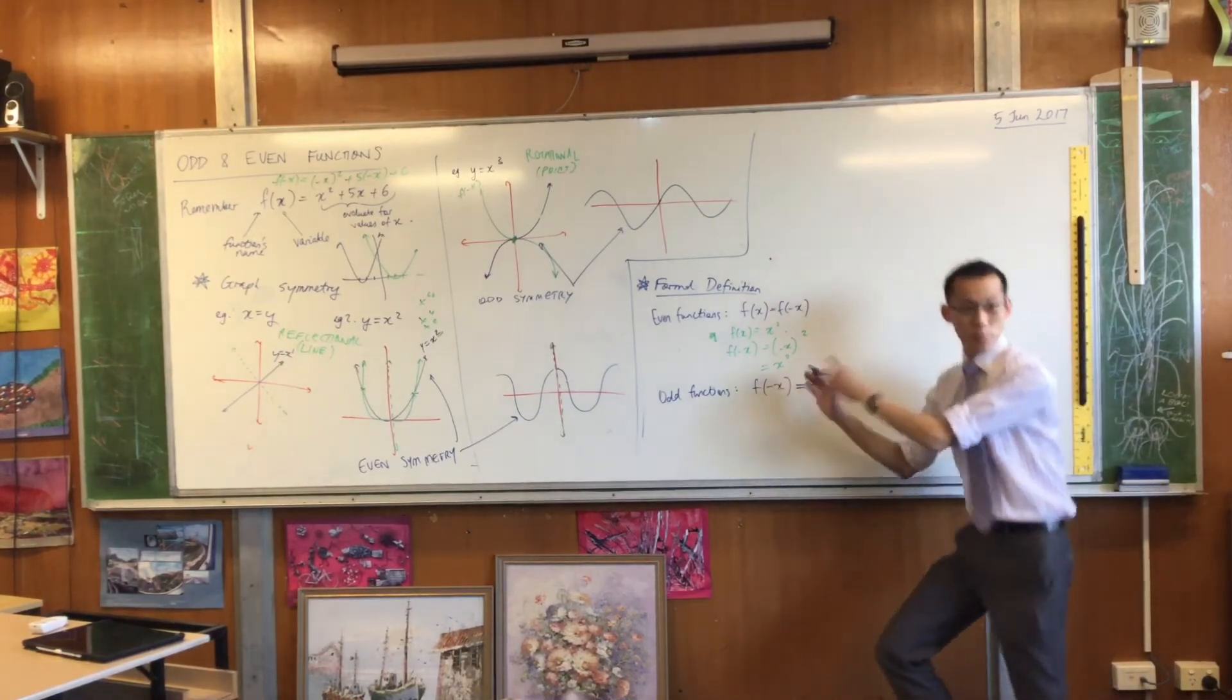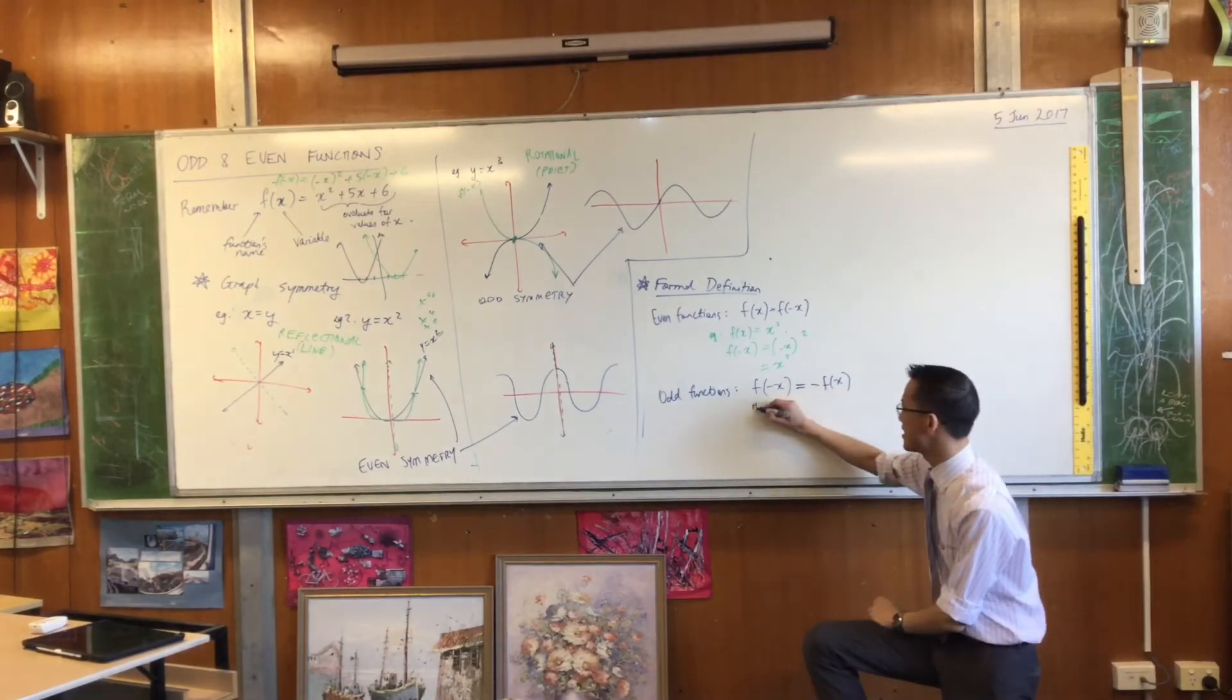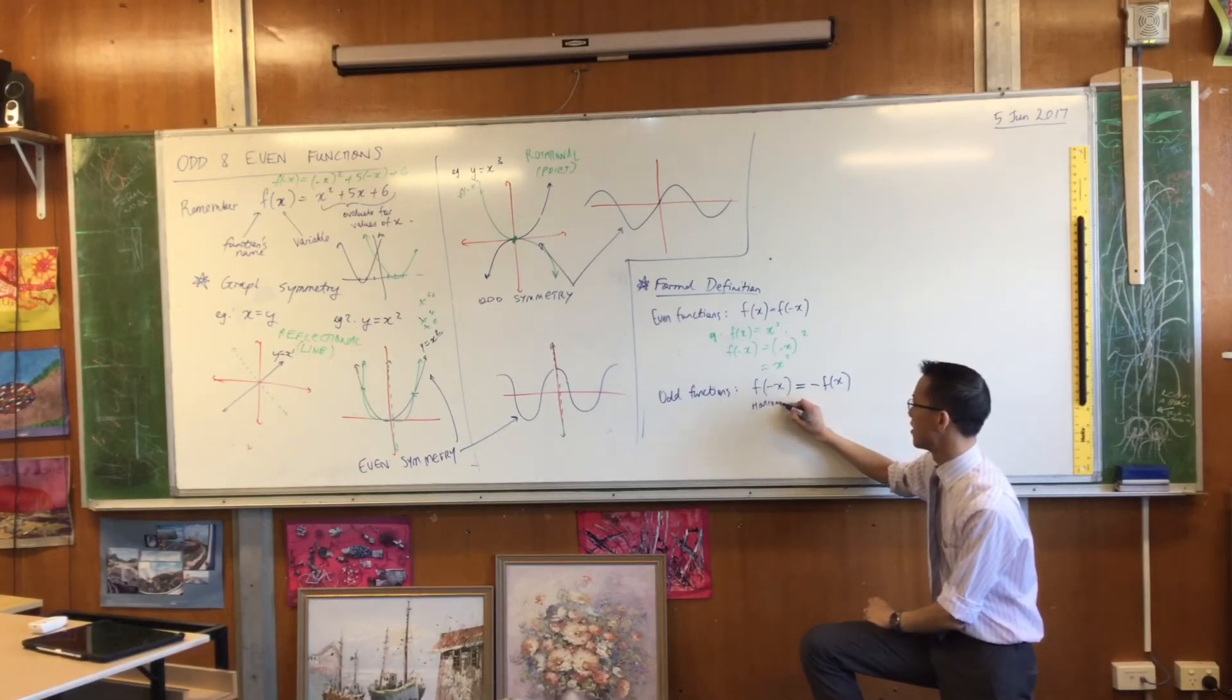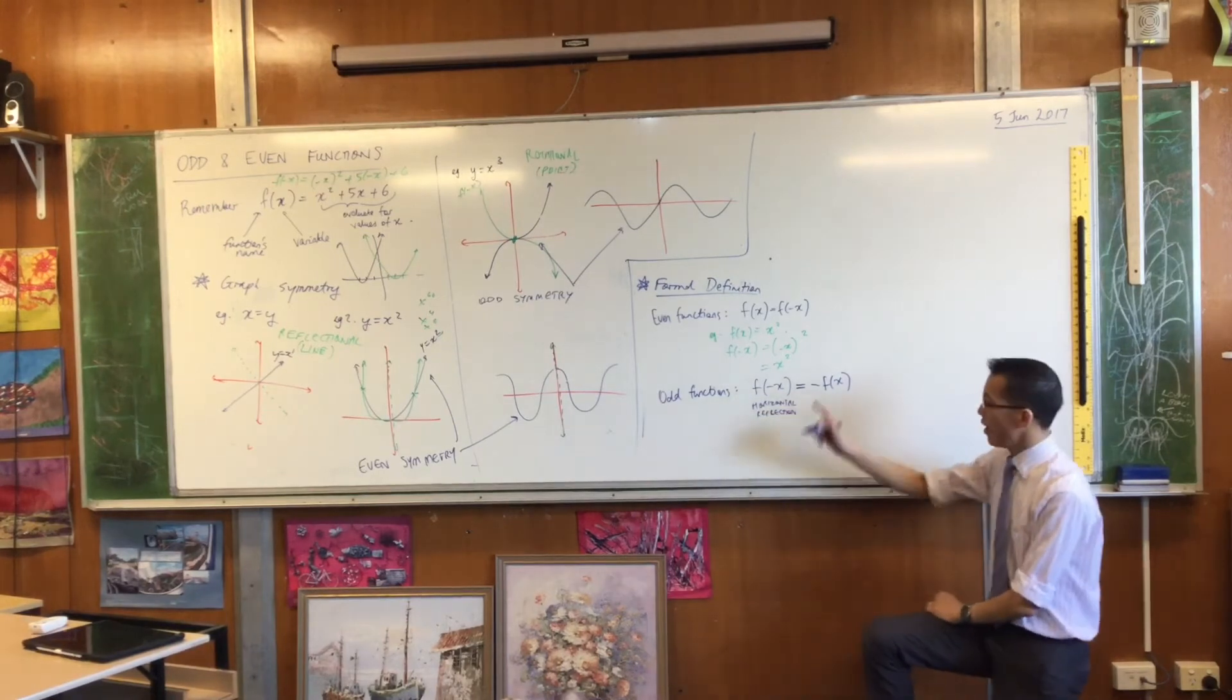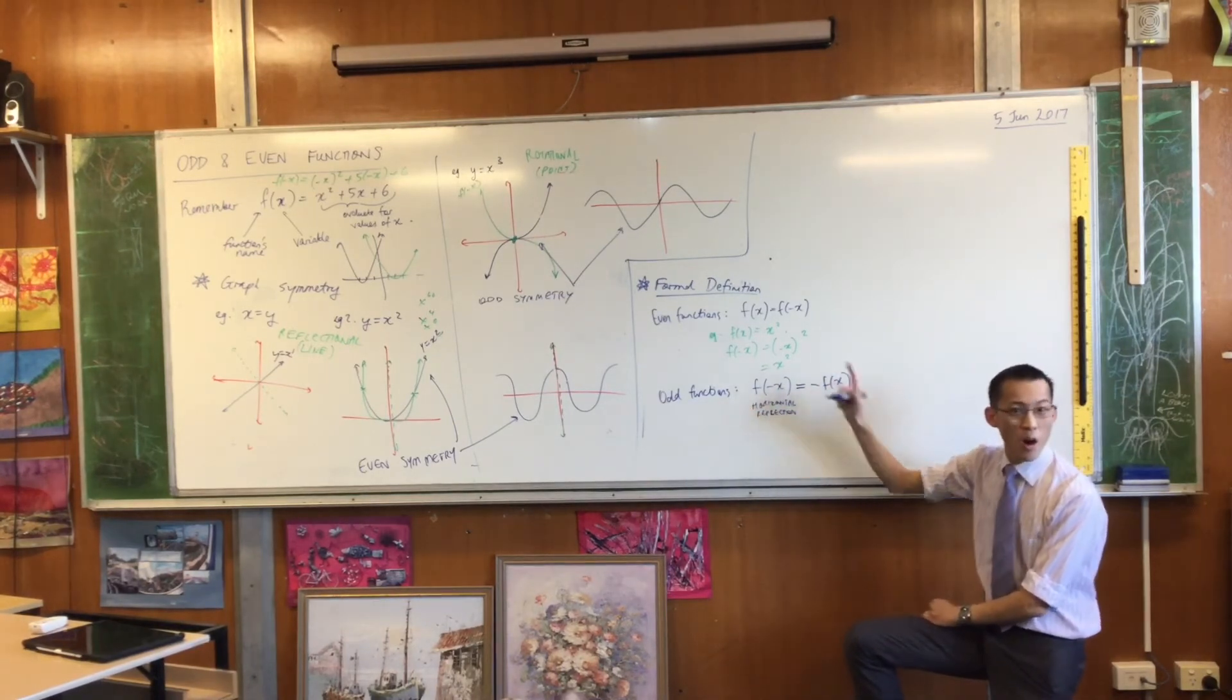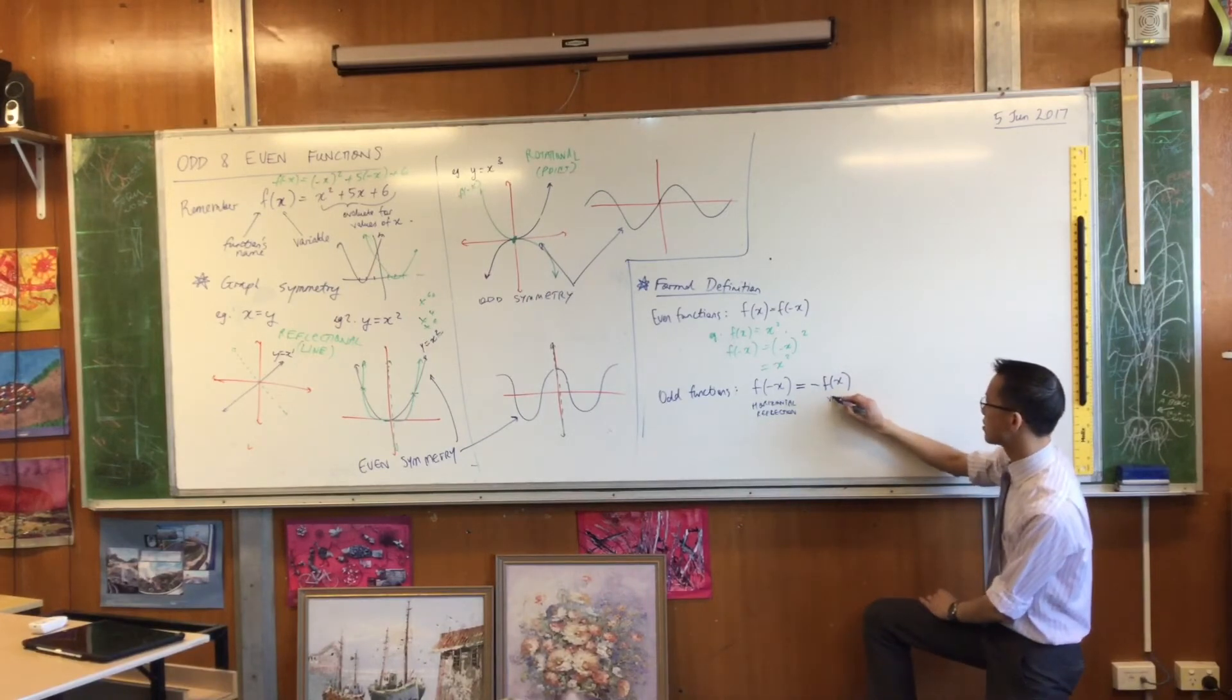See what that means? I want to supply some words under here so when you come back to this in a week, you'll be like, what the dickens does this mean? This is a horizontal reflection. If you have an odd function, a horizontal reflection will give you exactly the same result as a vertical one.